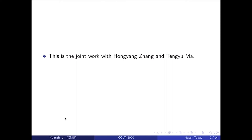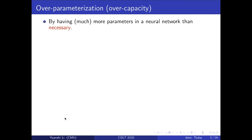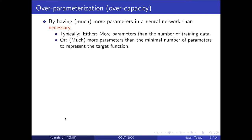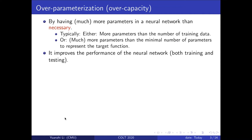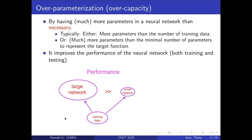What is over-parameterization or over-capacity in deep learning? Over-parameterization usually means having many more parameters in a neural network than necessary — either more parameters than the number of training data, or much more than the minimal number required to represent the target function. Having that many more parameters actually improves the performance of the neural network, both in training and testing. So a large neural net, much larger than necessary, usually performs better than a small network.